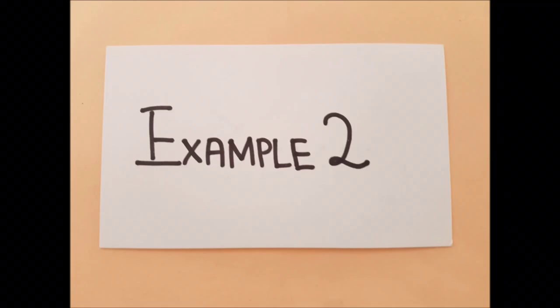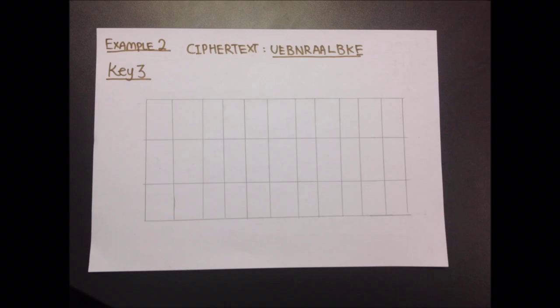Need more examples? Here is the second example. In the second example, the cipher text is UEBNRAALBKE. For this example, the grid will have 3 rows and 11 columns.